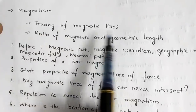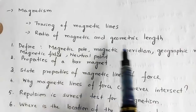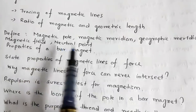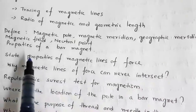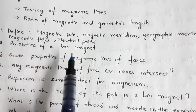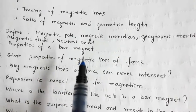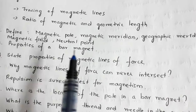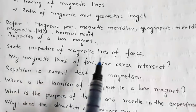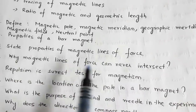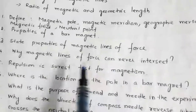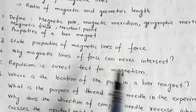Under the topic of magnetism, we have two experiments: tracing of magnetic lines and ratio of magnetic and geometric length. You may be asked to define standard terms like magnetic pole, magnetic meridian, geographic meridian, magnetic field, and neutral point. You may also be asked about the general properties of a bar magnet — the most essential being that when a bar magnet is suspended freely it aligns itself in the north-south direction of the Earth. State the properties of magnetic lines of force: why can magnetic lines of force never intersect?